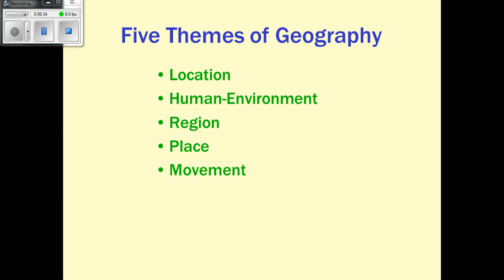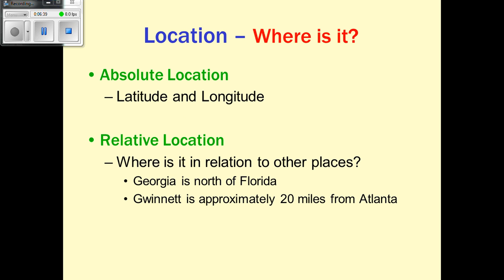The five themes of geography are location, human-environment interaction, region, place, and movement. Location should make you ask 'where is it?' with two types: absolute, which uses precise latitude and longitude coordinates, and relative, which is more general — for example, Georgia is north of Florida, or Gwinnett is approximately 20 miles from Atlanta. Relative location gives you a general understanding of where something is in relation to other places.